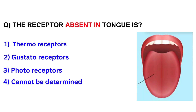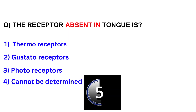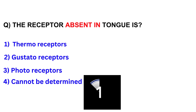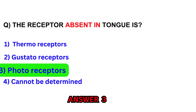The receptor absent in the tongue is? Thermoreceptors, gustatory receptors, photoreceptors, or cannot be determined. Answer: Photoreceptors.